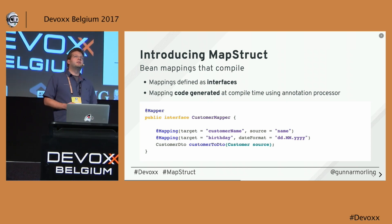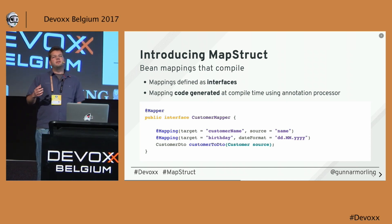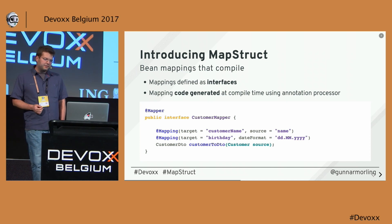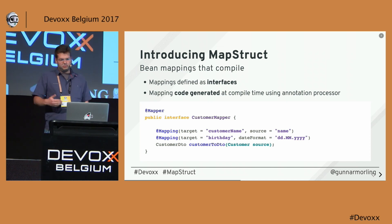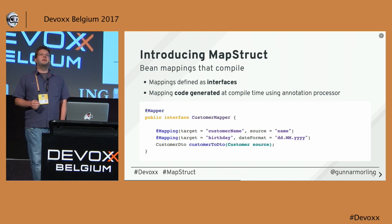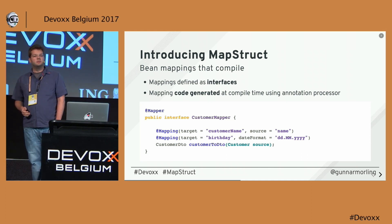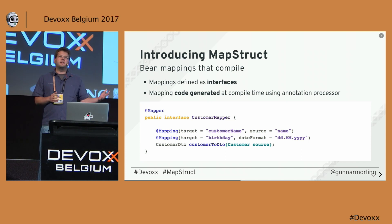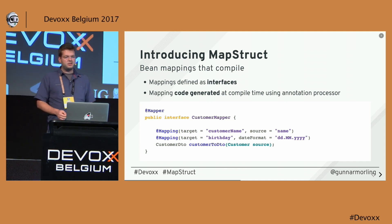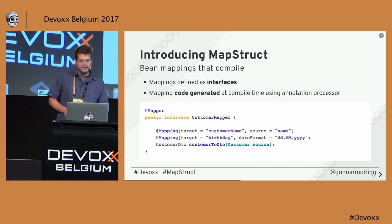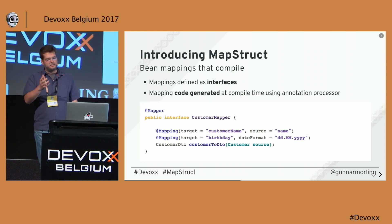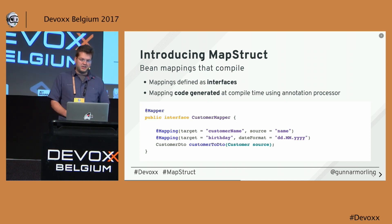I'm going to present a different approach: using compile-time code generation. What MapStruct does is generate mapper code at compile time, which you then use at runtime without any further overhead. You define plain Java interfaces with mapping methods that take the source object as a parameter and the target type as a return type. MapStruct generates an implementation of that interface, which you can configure using annotations to adjust the mapping process.